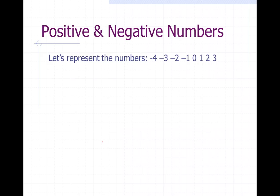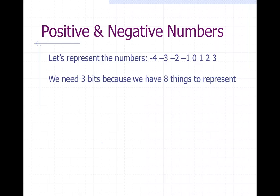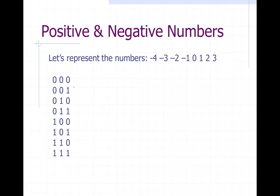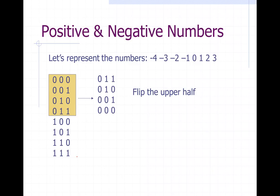Now let's talk about numbers — positive and negative numbers. First of all, let's represent the numbers negative four, negative three, negative two, negative one, zero, one, two, and three all in binary. To do this we're going to need three bits, because we're trying to represent eight things. So we've got one, two, three, four, five, six, seven, eight — eight different things to represent. With three digits, notice there's actually a sequence and pattern to how you write these numbers out.